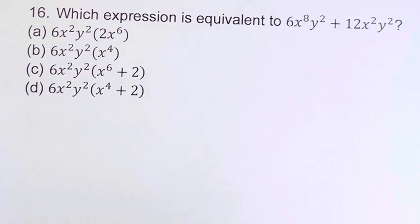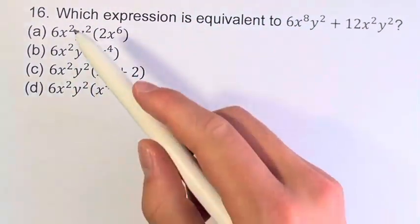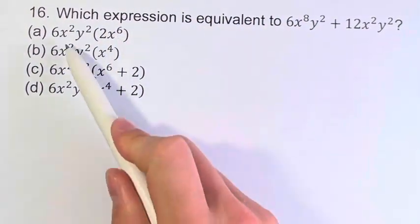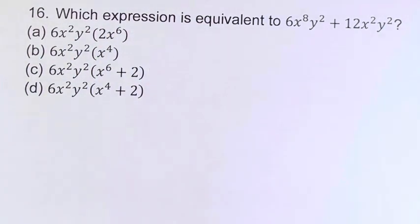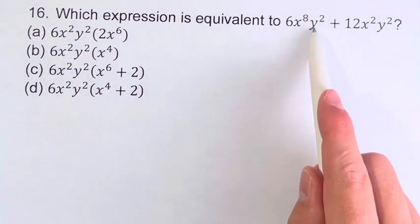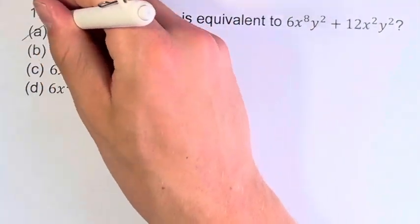So if we look here, a and b, we're going to multiply this term by this term. What that's going to produce is just one term. We notice here we have two terms, so we know it can't be a or b.